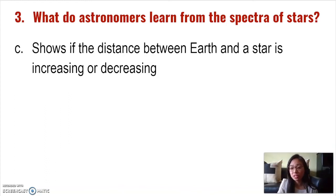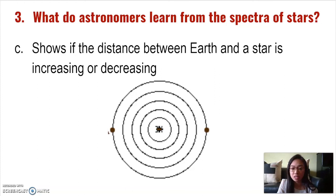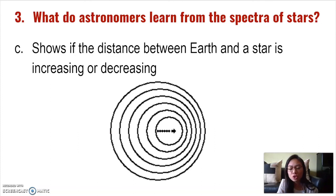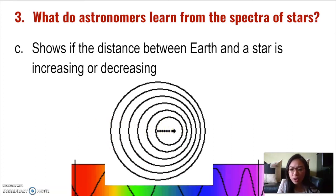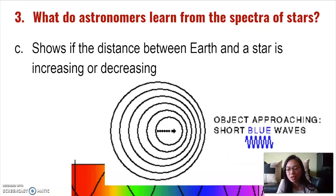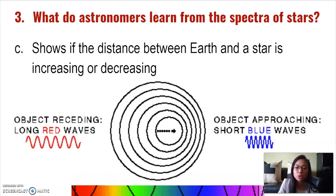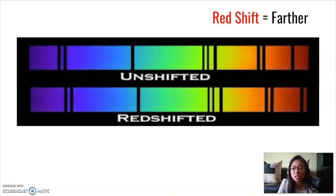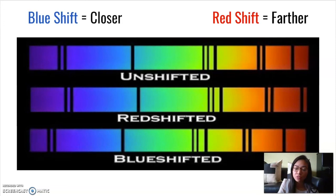The spectra of stars can also help us determine if the distance between Earth and a star is increasing or decreasing. Just as when you put your finger into calm water, waves emanate out in all directions evenly. If you move your finger to the right, you push into the waves, shortening the wavelength, while waves behind stretch out. Light toward the red end has longer wavelengths and lower frequency; light toward the blue end has shorter wavelengths and higher frequency. As objects approach, their spectra shift toward the blue because the wavelength gets shorter. As they move away, their spectra shift toward the red. So a red shift means the star is moving farther away, while a blue shift means the star is getting closer.